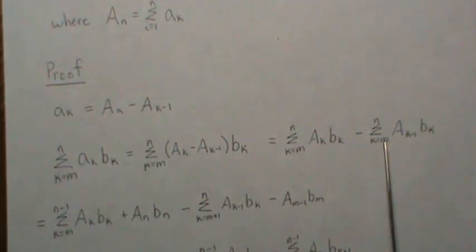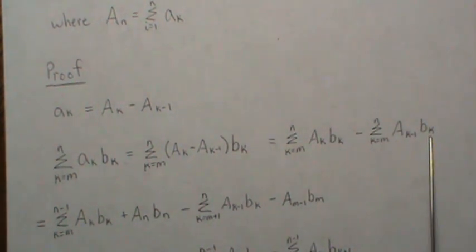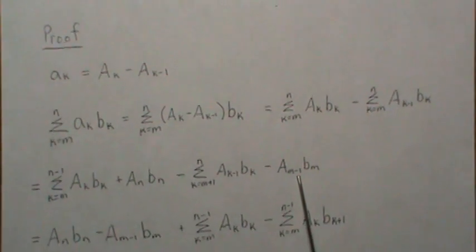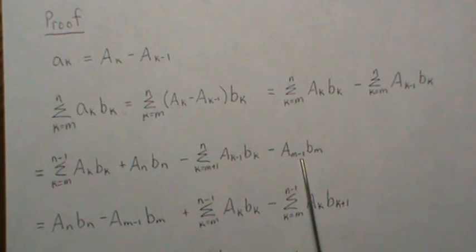This sum, we're going to take off the bottom one and then go from m+1 to n, which is what this is. But then we can't forget about that first term, which is capital A_{m-1} times b_m. That's what this is.